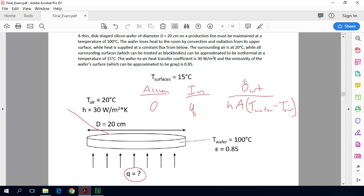So because we have this smaller object in a large enclosure, we can use a simplified equation where the radiative heat transfer lost, the heat lost by radiation is going to be the area of our wafer's upper surface, multiplied by its emissivity, multiplied by the Stefan Boltzmann constant, and then we'd have its temperature, T wafer to the fourth power minus T of all the surrounding surfaces to the fourth power.